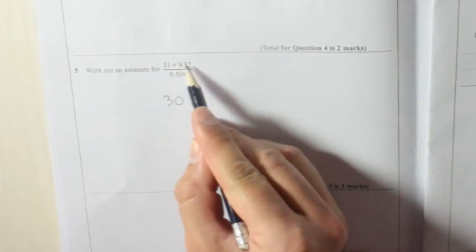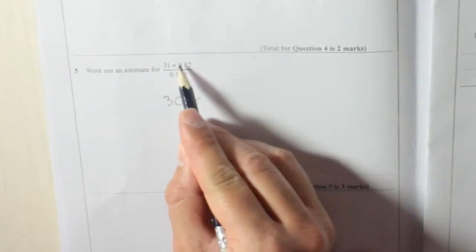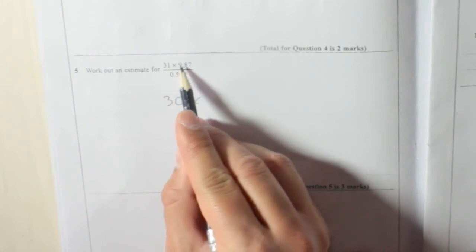Times by 9.87, the first significant figure is 9, that's the unit, so to the nearest unit is 10.